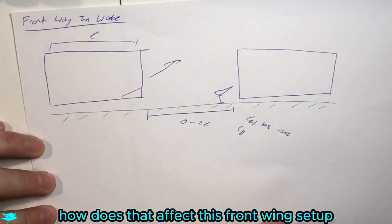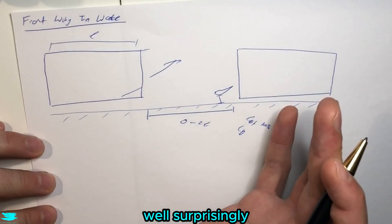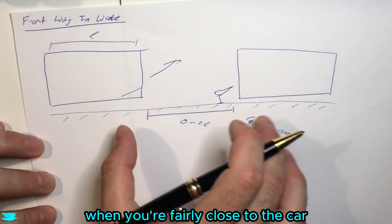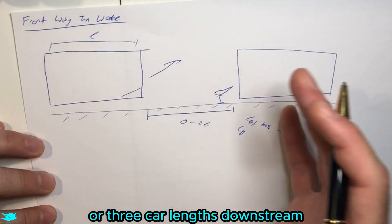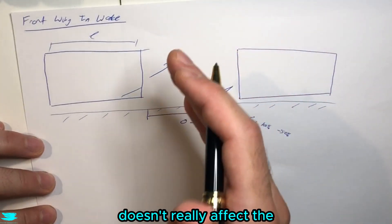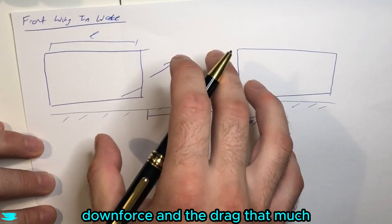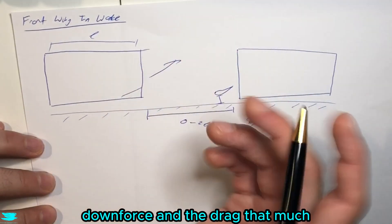What about the distance between this upstream car and downstream car? How does that affect this front wing setup? Well surprisingly, it's not actually that susceptible when you're fairly close to the car. Between zero and two car lengths or three car lengths downstream, putting this car further and further downstream doesn't really affect the downforce and the drag that much.